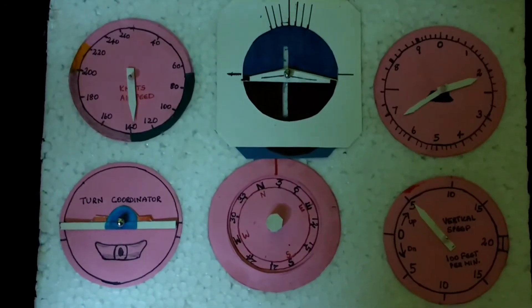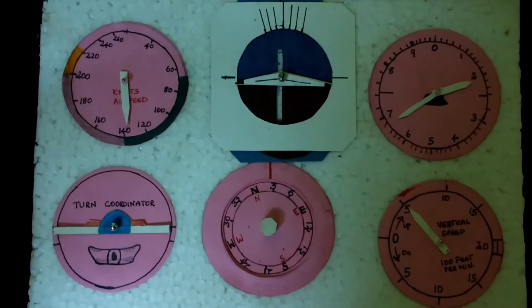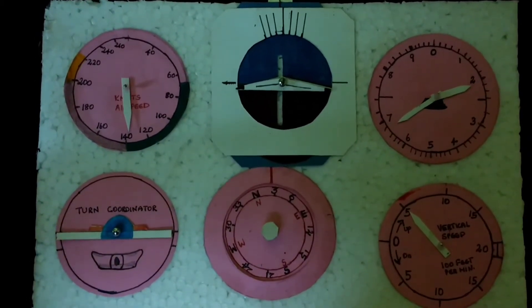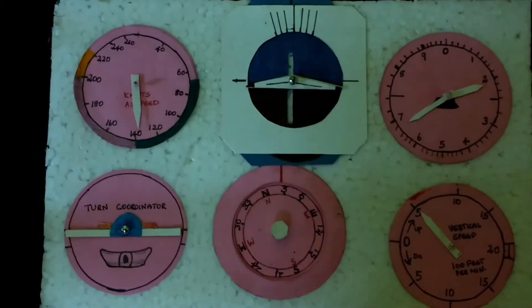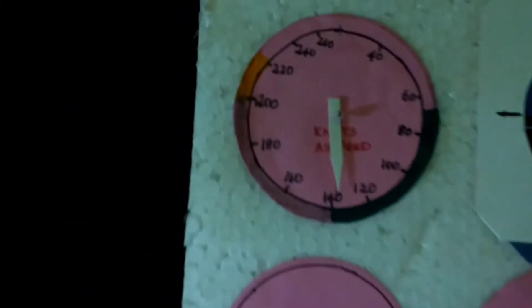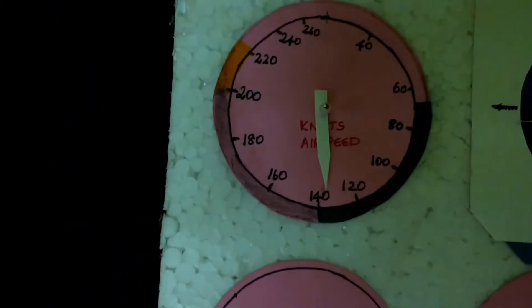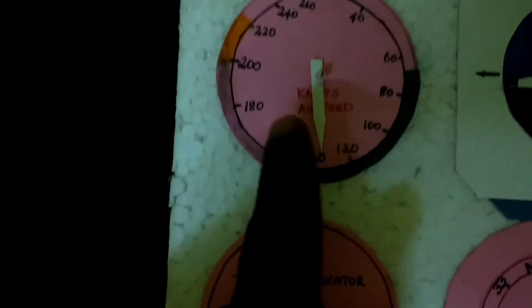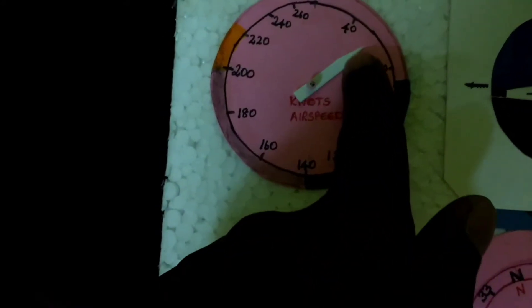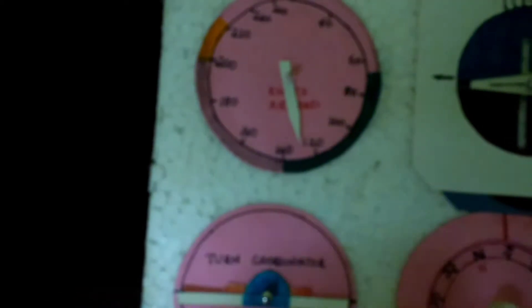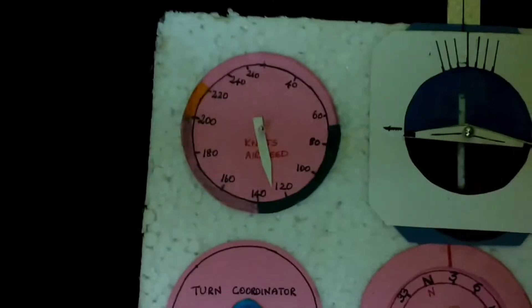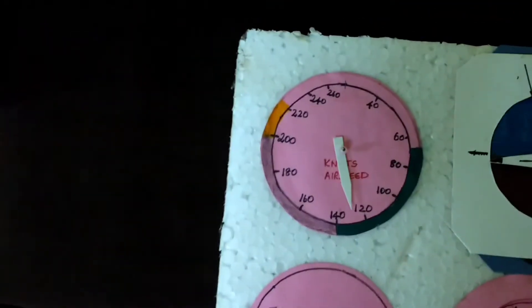This is the instrument panel for the PAPT test. I have six instruments on this panel and I'll show you one by one. The first instrument is the airspeed indicator—we have from 40 to 220 knots. You can adjust the hand so that you can read the speed.